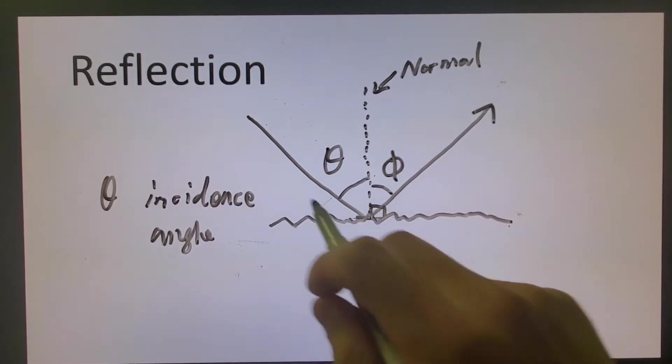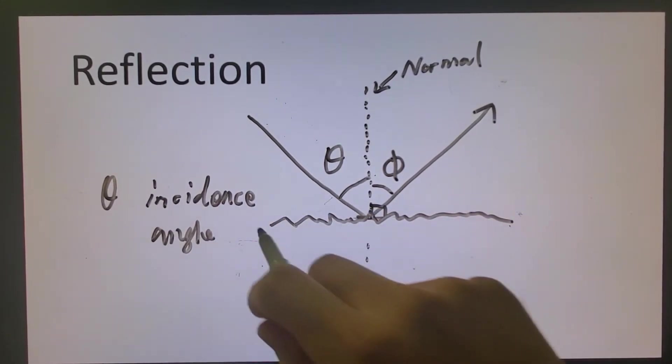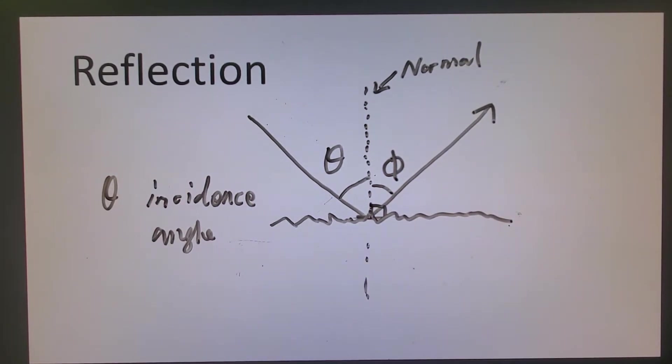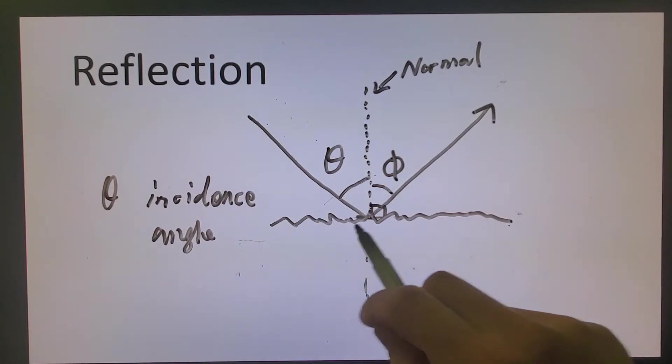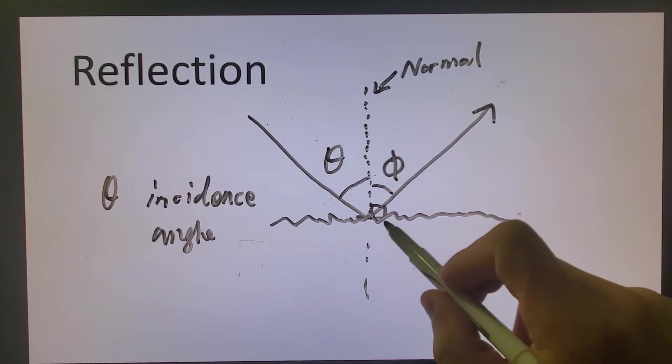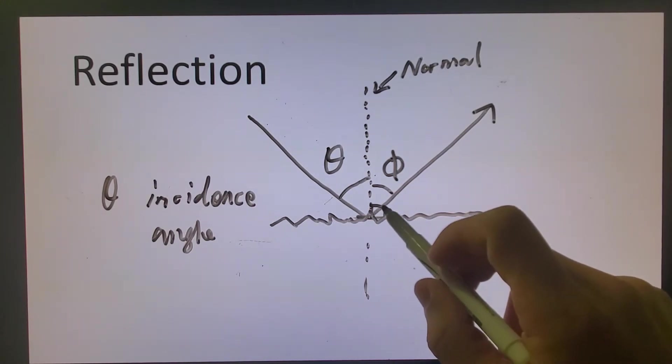When it's perfectly flat, we call it specular reflection. When it is not perfectly flat, we call it off specular reflection. Sometimes we call it diffused reflection.